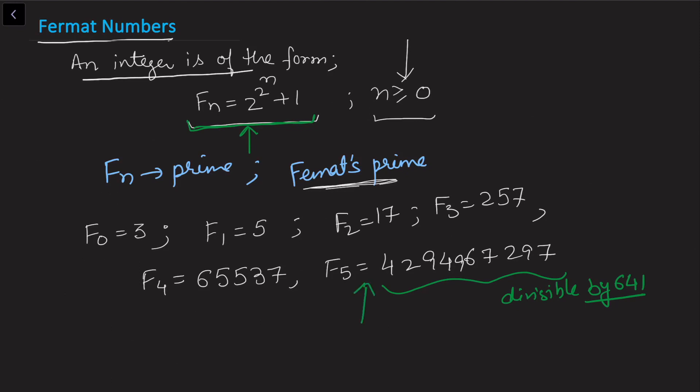But Fermat numbers and Fermat primes are very much in use for primality testing, which is used a lot in cryptography and other areas. One of the tests which involves these Fermat primes is Pepin's test.